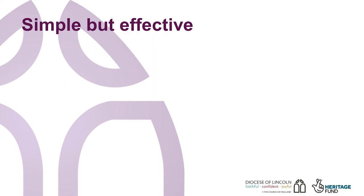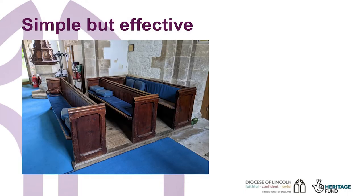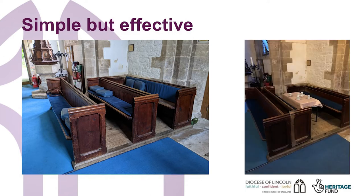The first example is Parkes and Saint Nicholas. They applied for a temporary minor reordering licence to change one pew 180 degrees in order to fit a table in. The example on the left is the before and the example on the right is the after. This allowed them to put a table in so that parishioners could have tea and coffee afterwards — a very simple but very effective way of gaining some community space and keeping people in the church after services, allowing for more socialisation beyond the regular pattern of worship.